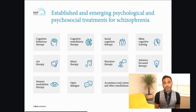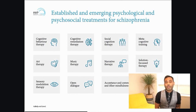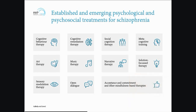The next important aspect is psychosocial treatments. For example, cognitive behavioral therapy for resistant hallucinations and delusions, music therapy, art therapy, cognitive remediation for cognitive deficits, social skills training, narrative therapy, and metacognitive training. These are all a range of treatments included in guidelines so that clinicians do not forget the psychosocial aspects when it comes to schizophrenia.